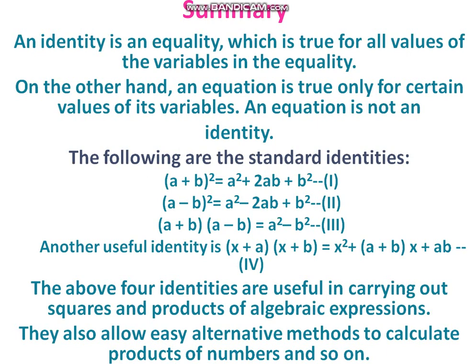Summary: An identity is an equality which is true for all the values of the variable — for any values of a and b we substitute, LHS should equal RHS. An equation is true only for certain values and is not an identity. The standard identities are: (a plus b) whole square equals a squared plus 2ab plus b squared; (a minus b) whole square equals a squared minus 2ab plus b squared; (a plus b) into (a minus b) equals a squared minus b squared; and (x plus a) into (x plus b) equals x squared plus (a plus b) into x plus ab. These four identities are very useful for finding products.